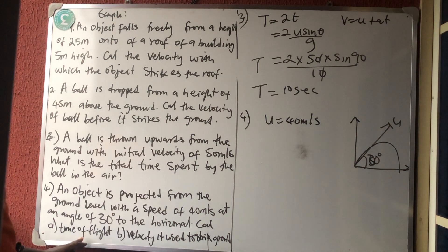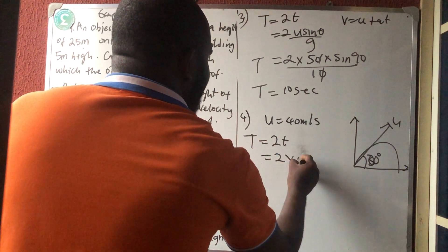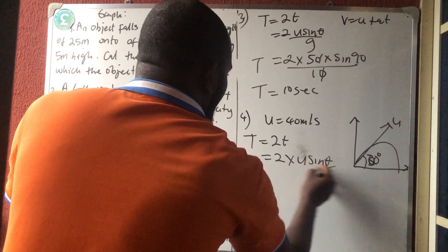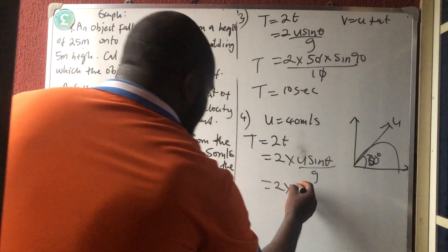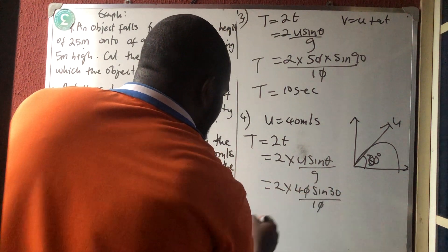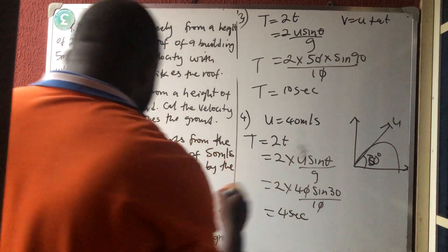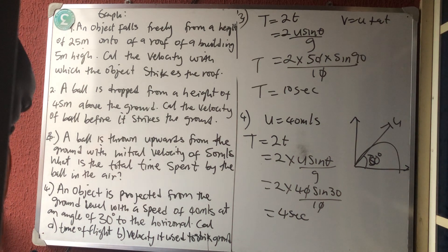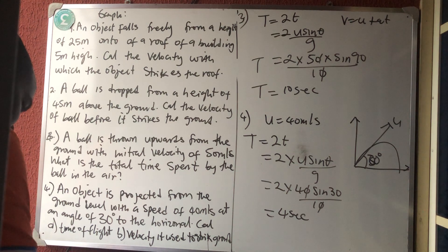We calculate the time of flight using the formula 2U sine theta over G, which is 2 times 40 times sine 30 divided by 10. Sine 30 is 0.5, so 0.5 times 2 is 1, giving us 4 seconds.